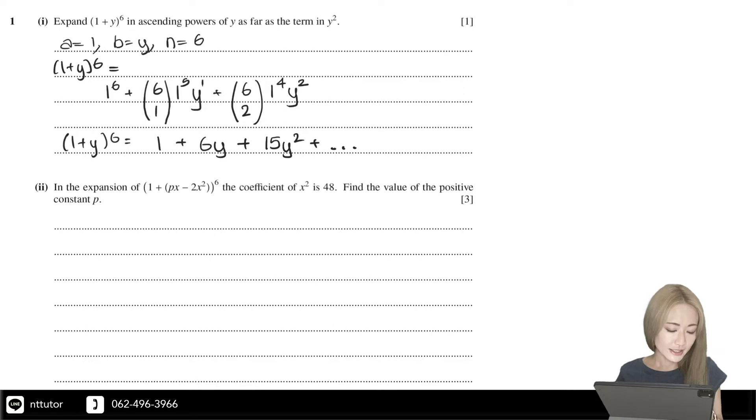Part 2: In the expansion of (1 + px - 2x²)^6, the coefficient of x² is 48. Find the value of the positive constant p.